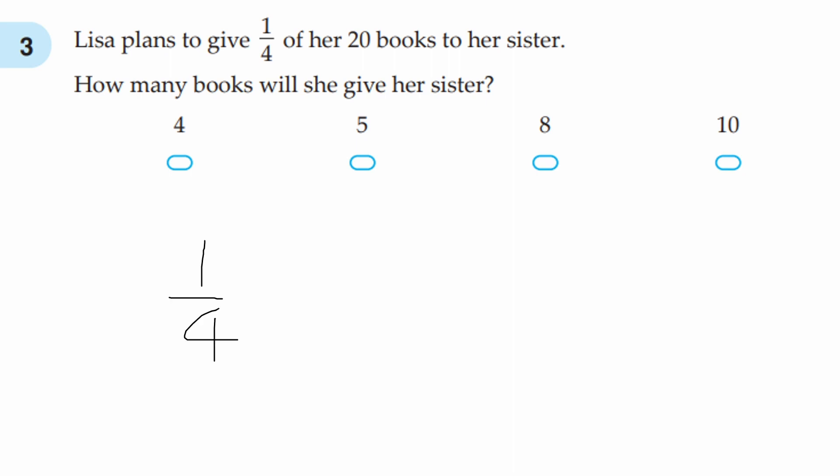we have 1 over 4. How do we make it so that it's the same as over 20, because she has 20 books? We know that 4 times 5 is 20. And what we do to the denominator, we always have to do to the numerator, so 1 times 5 is 5. The answer is 5 over 20, or 5 books, so the answer is B, 5.